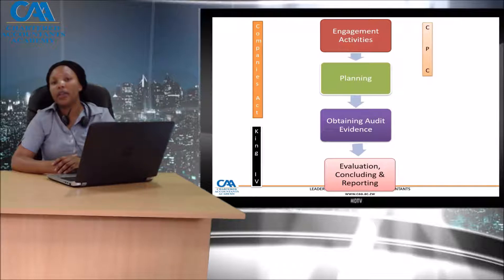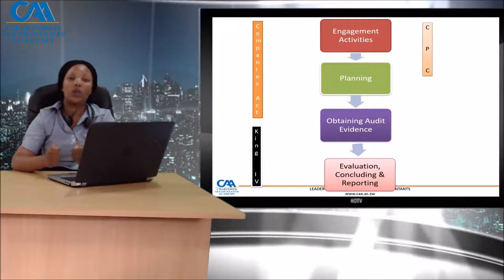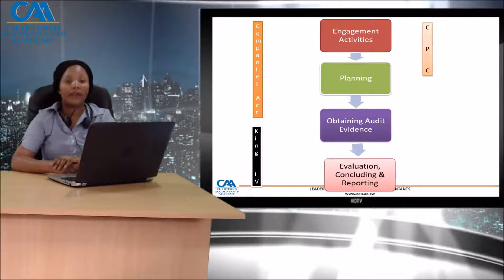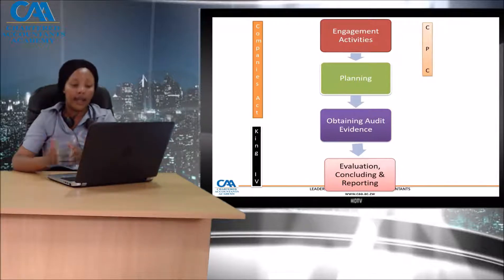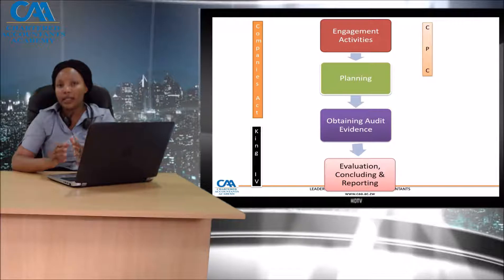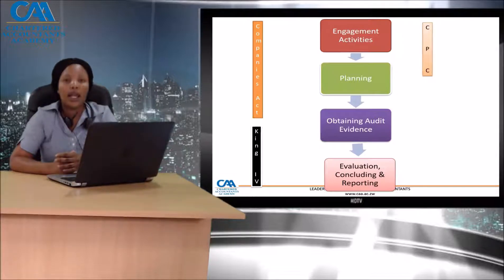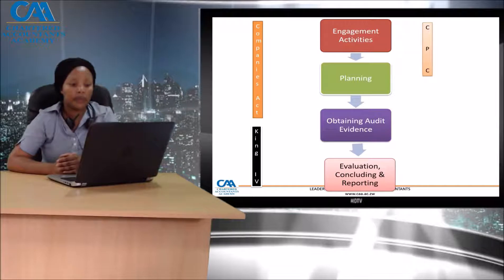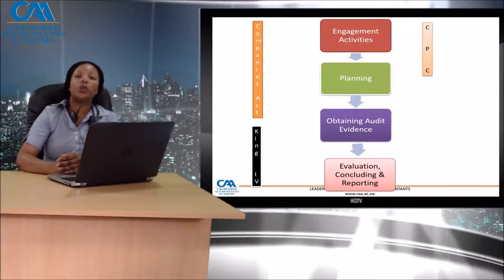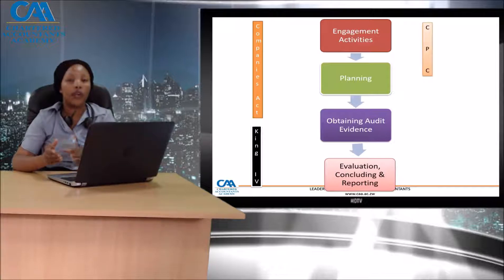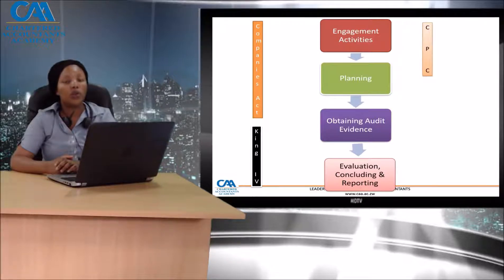At the audit evidence gathering stage, this is when you actually do the evidence gathering to support your conclusion. Once you've gathered the evidence, you'll need to evaluate it. Is it enough? Was it adequate? Have you managed to obtain sufficient evidence? Is the evidence appropriate for you to express an appropriate audit opinion? This is the stage at which you're concluding on your evaluated, gathered evidence. And lastly, you will then conclude by reporting.